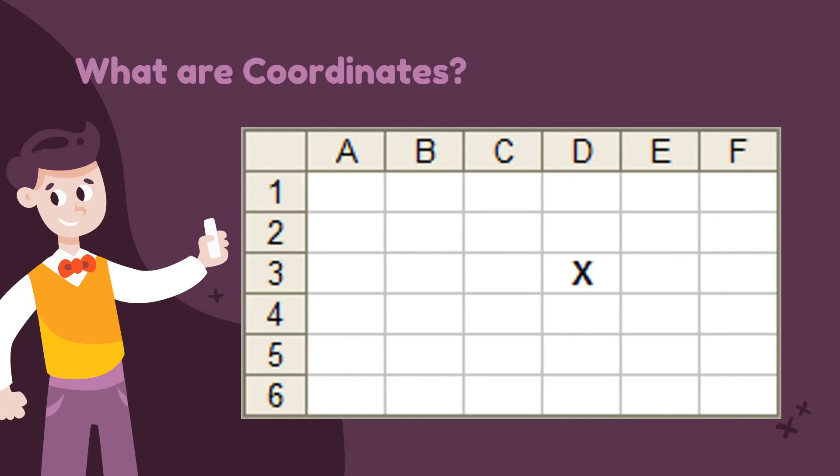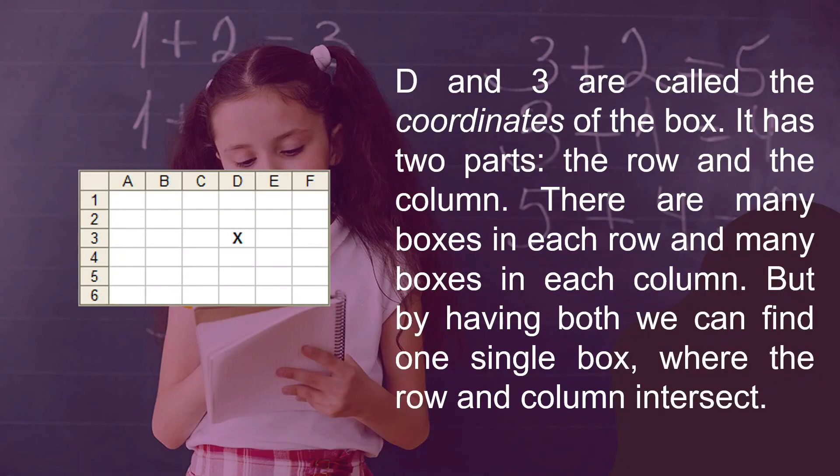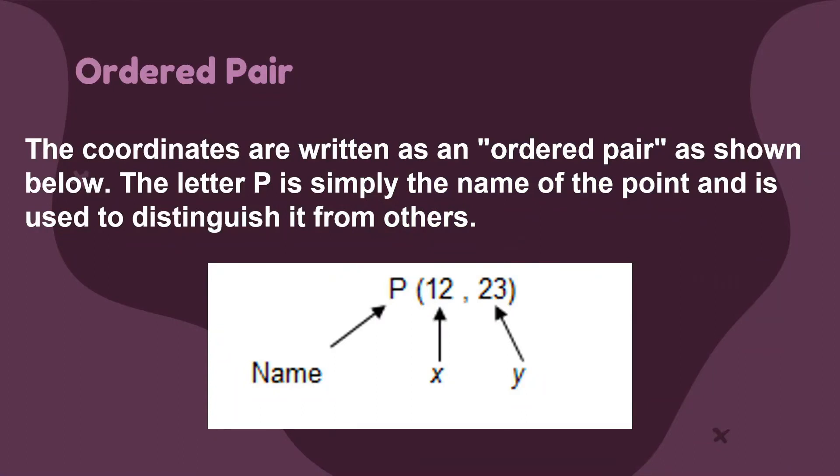What are coordinates? To introduce the area, consider the grid shown in this presentation. The columns of the grid are lettered A, B, C, D, E, F, and the rows are numbered 1, 2, 3, 4, 5, 6. We can see that the X is in the box D, 3. That is column D, row 3. D and 3 are called the coordinates of the box. It has two parts, the row and the column. There are many boxes in each row and many boxes in each column, but having both, we can find one single box where the row and column intersect.